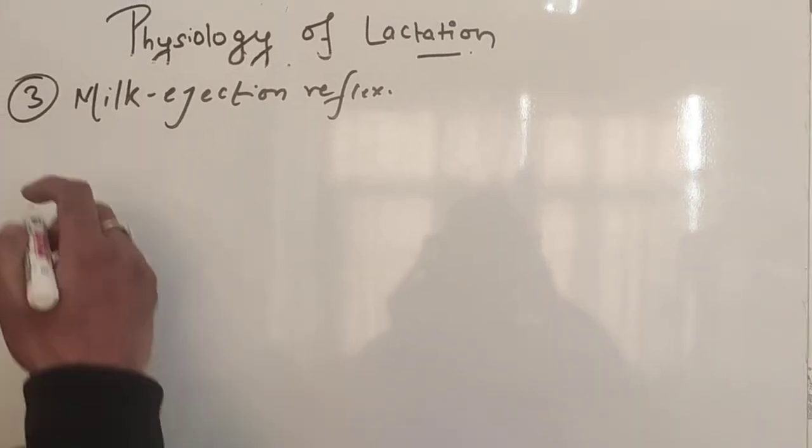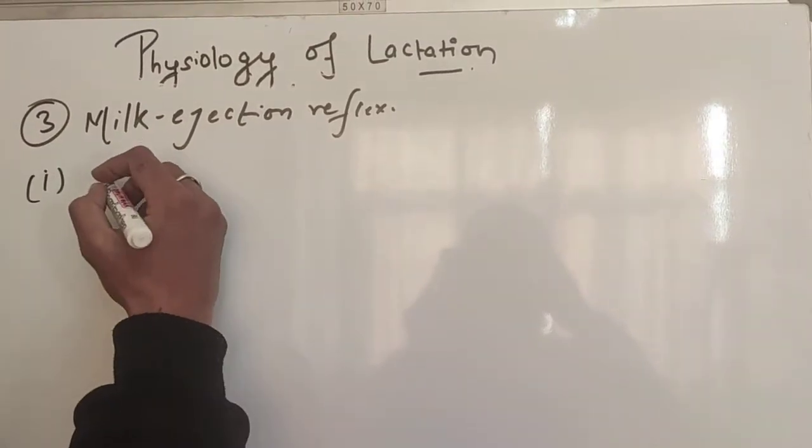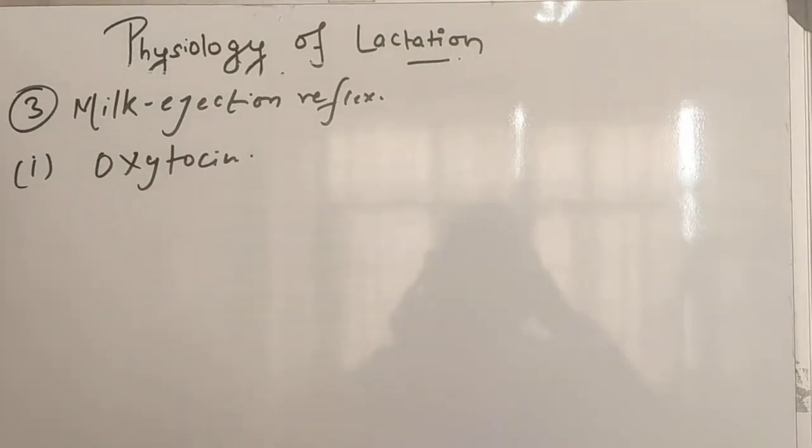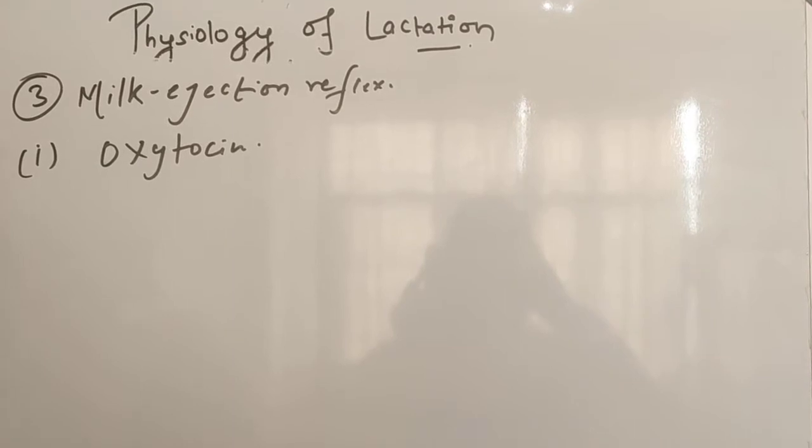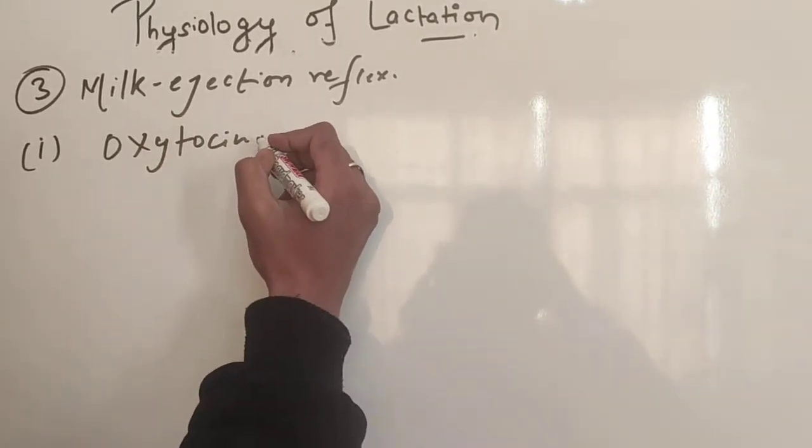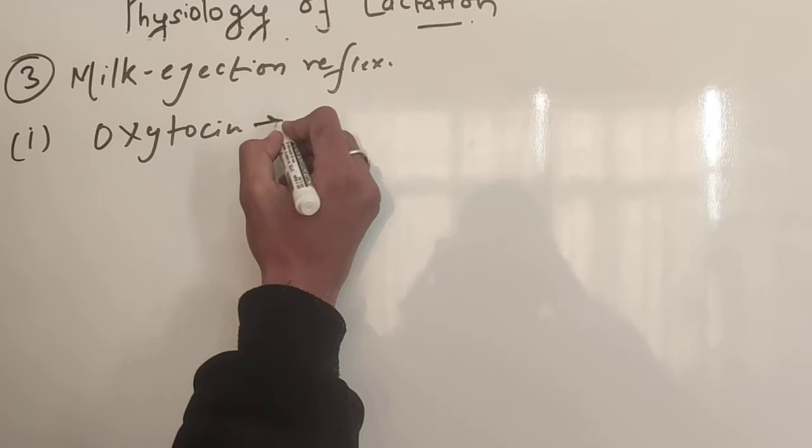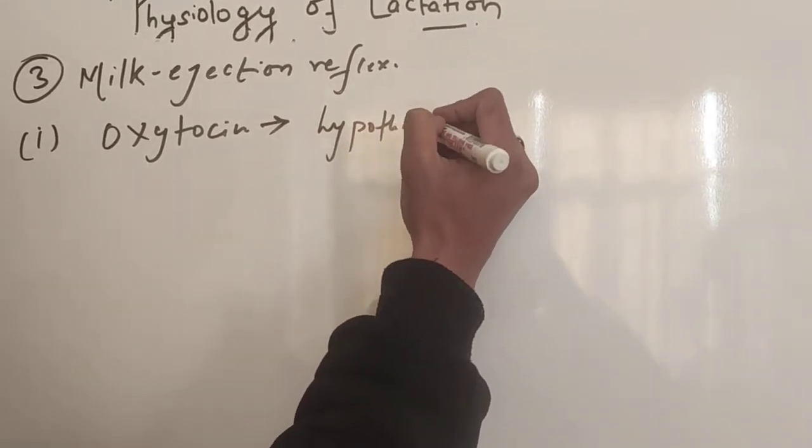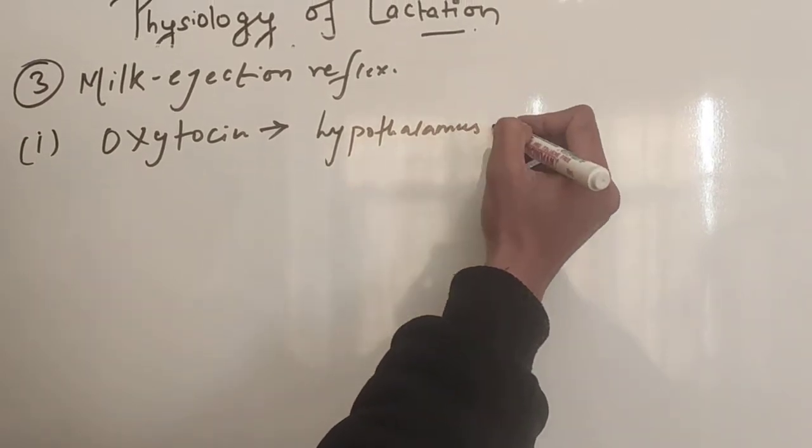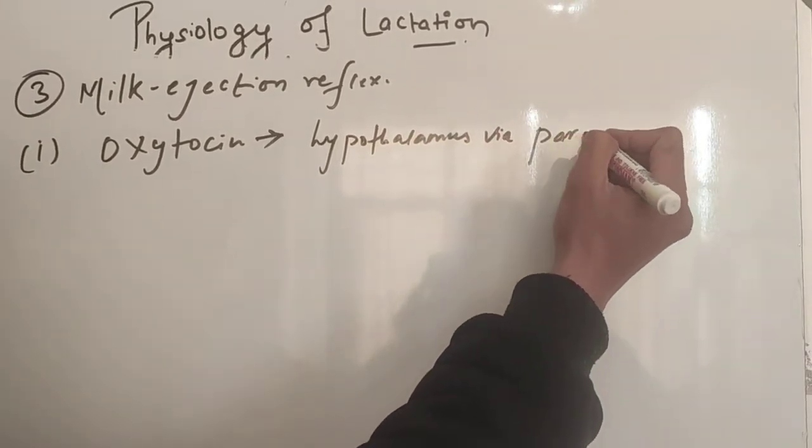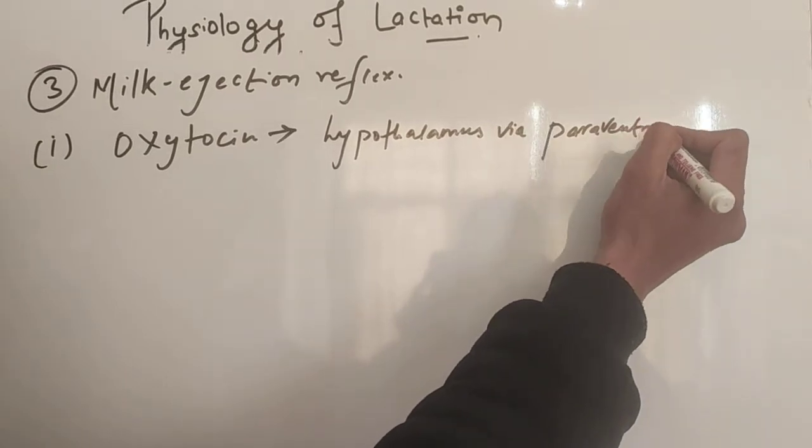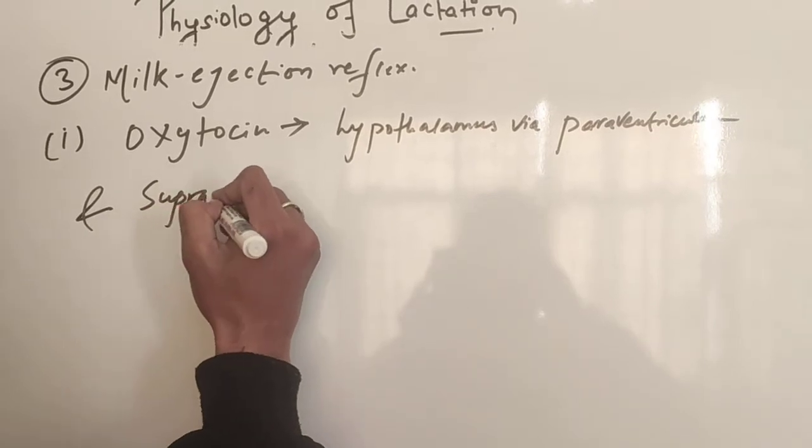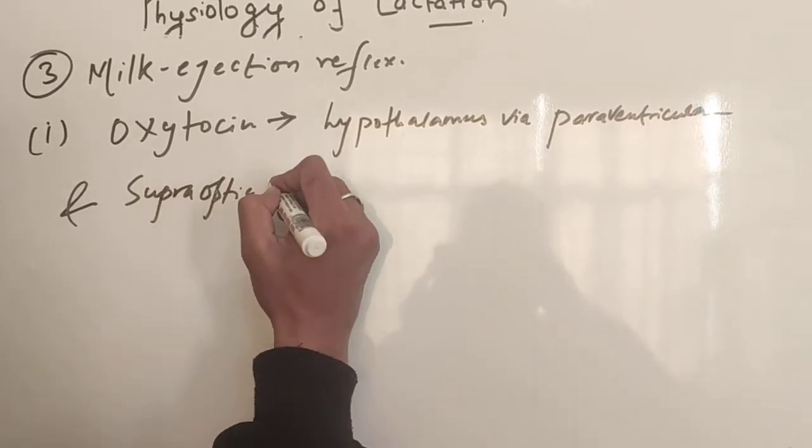Talking about milk ejection reflex. It is the hormone oxytocin that is responsible for this reflex. Now I am going to talk about this reflex in detail. Oxytocin is secreted from hypothalamus via paraventricular and supraoptic nucleus.